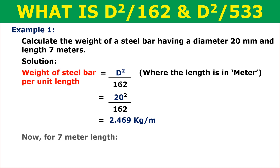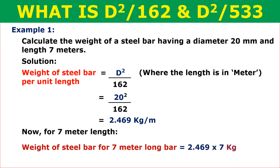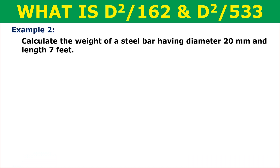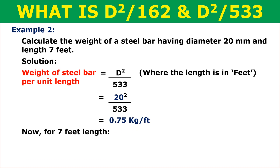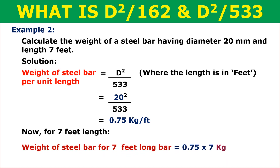For 7 meters length, the weight of the steel bar is equal to 2.469 multiplied by 7, which is equal to 17.284 kg. Similarly, we can calculate the weight of a steel bar having a diameter of 20 mm and length 7 feet. The weight of steel bar per unit length is equal to d² by 533, where the length is in feet. Substituting d = 20, we get 20² by 533, which is equal to 0.75 kg. For 7 feet length, the weight is 0.75 multiplied by 7, which equals 5.253 kg.